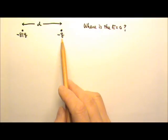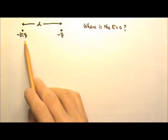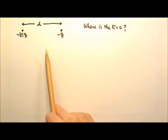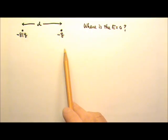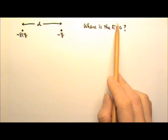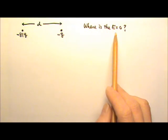Two charges, negative q and negative 81q, are a distance d apart. Determine the point, other than infinity, at which the net electric field is zero.